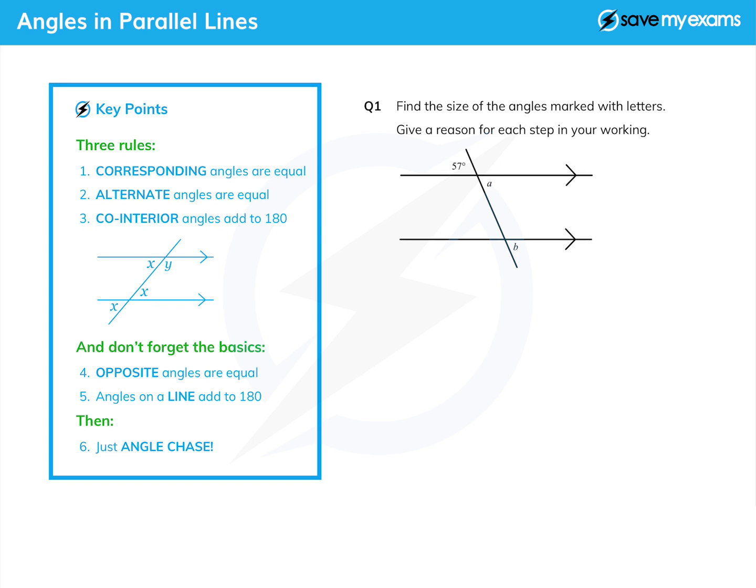Then we have what we call co-interior angles, and that's this x and this y. Again, there used to be a letter name for it, there's a C, but we don't call it that anymore and you won't get the marks if you use those letters. So x and y add up to 180.